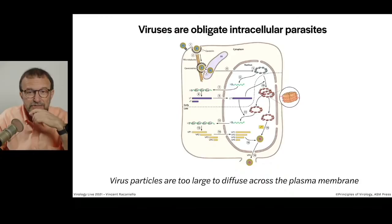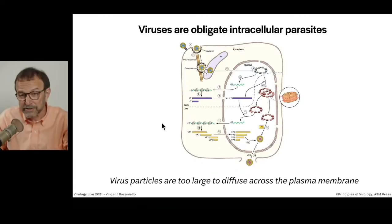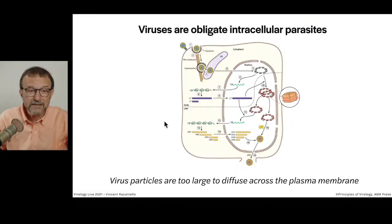As you know by now, viruses are obligate intracellular parasites. They need to get inside of a cell in order to reproduce — it's part of the definition of a virus. However, the plasma membrane is a very good barrier for the cell. Virus particles are too big to simply diffuse across it, so there have to be specific mechanisms to take them up. Fortunately, cells have those kinds of mechanisms. And as always, virus evolution has led to viruses adapting to different ways of cell uptake.